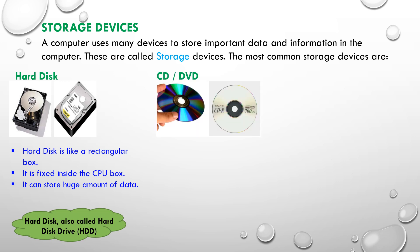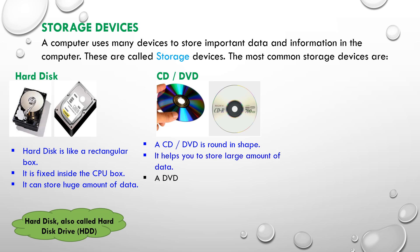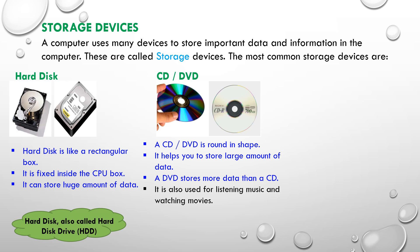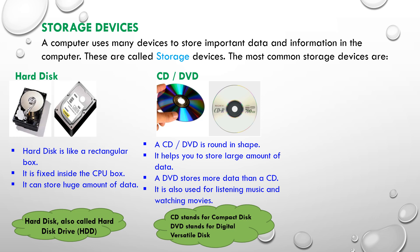A CD or DVD is round in shape. It helps you to store a large amount of data. A DVD stores more data than a CD. It is also used for listening to music and watching movies. CD stands for compact disk. DVD stands for digital versatile disk.